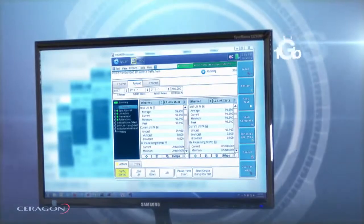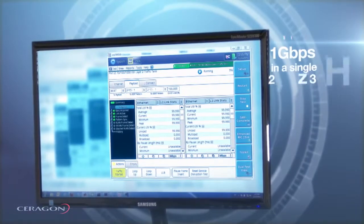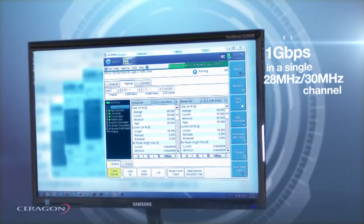We are going to use this setup to demonstrate a true 1 gigabit per second throughput using a 28 or 30 MHz channel.